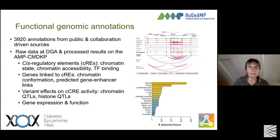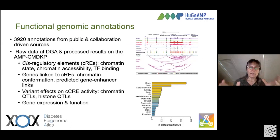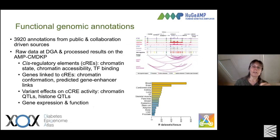Functional genomic annotations delineate regions of the chromosome that have potential for gene regulation. Most genetic associations are actually not in protein coding sequences - they're outside of those in the genome and probably exert their effects through gene regulation. These epigenomic data are very important in trying to figure out how those variants exert their effects and what genes are their targets.